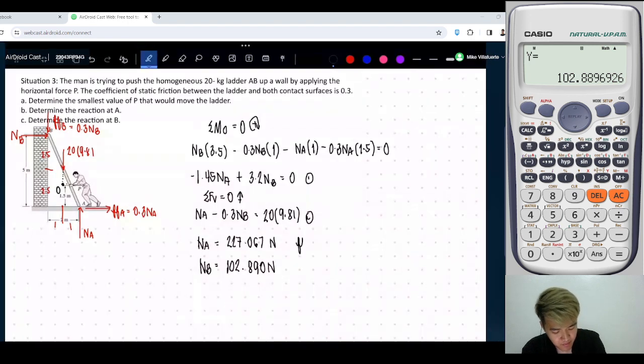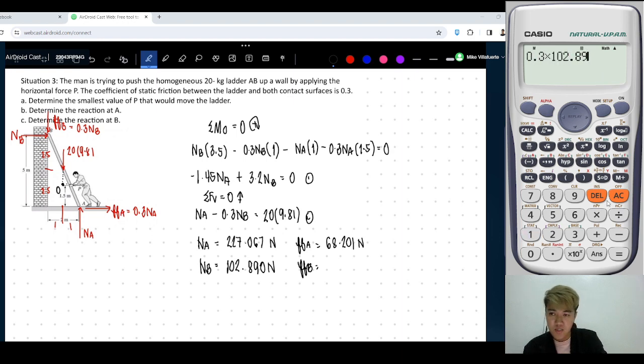And then FA equals... multiply by the coefficient of friction. That is 227.027 times 0.3. We will get 68.201 N. Then 0.3 times 102.89: 30.867 N.